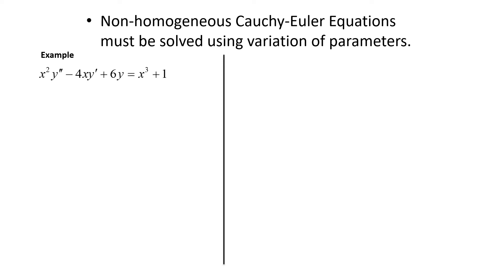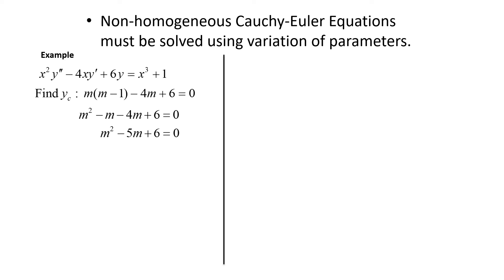As with all non-homogeneous equations, we start by solving the homogeneous part to find the complementary function yc. The auxiliary equation is m(m-1) - 4m + 6 = 0, which simplifies to m² - 5m + 6 = 0, factoring as (m-2)(m-3) = 0. This gives roots 2 and 3, so yc = c1 x² + c2 x³.